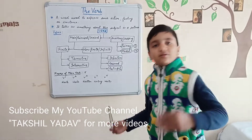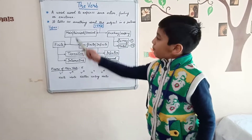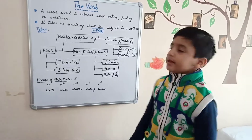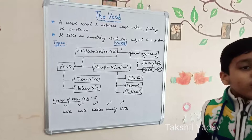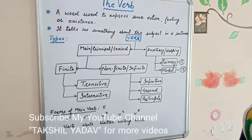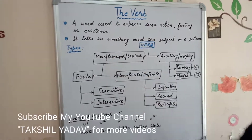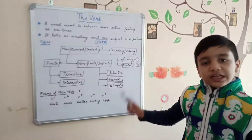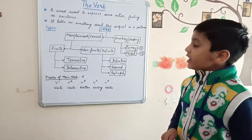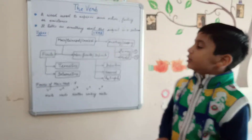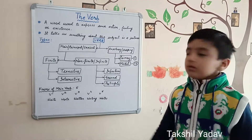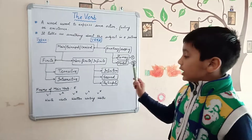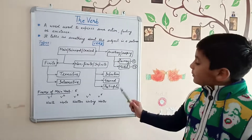A verb is basically divided into two types: main verb (also called full, principal, or lexical verb) and auxiliary or helping verb. If we go further, main verb is divided into finite and non-finite verbs. Finite verbs are divided into transitive and intransitive verbs. Non-finite verbs are divided into infinitive, gerund, and participle.